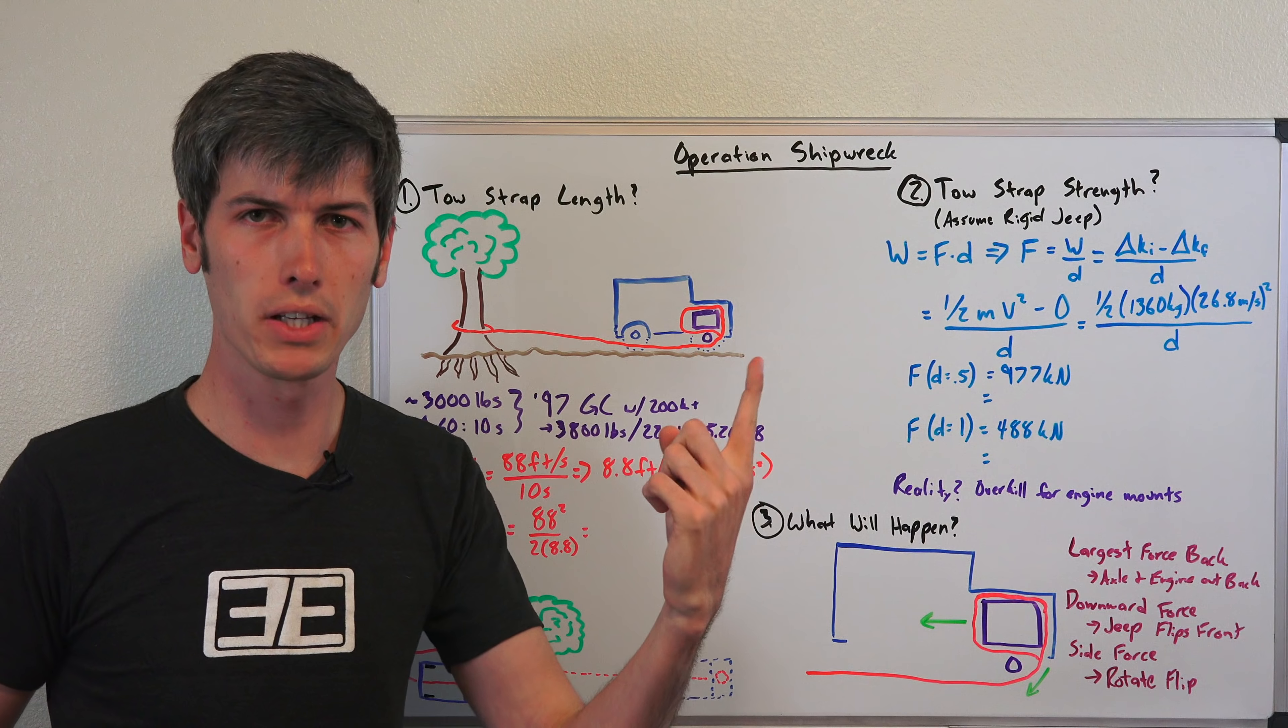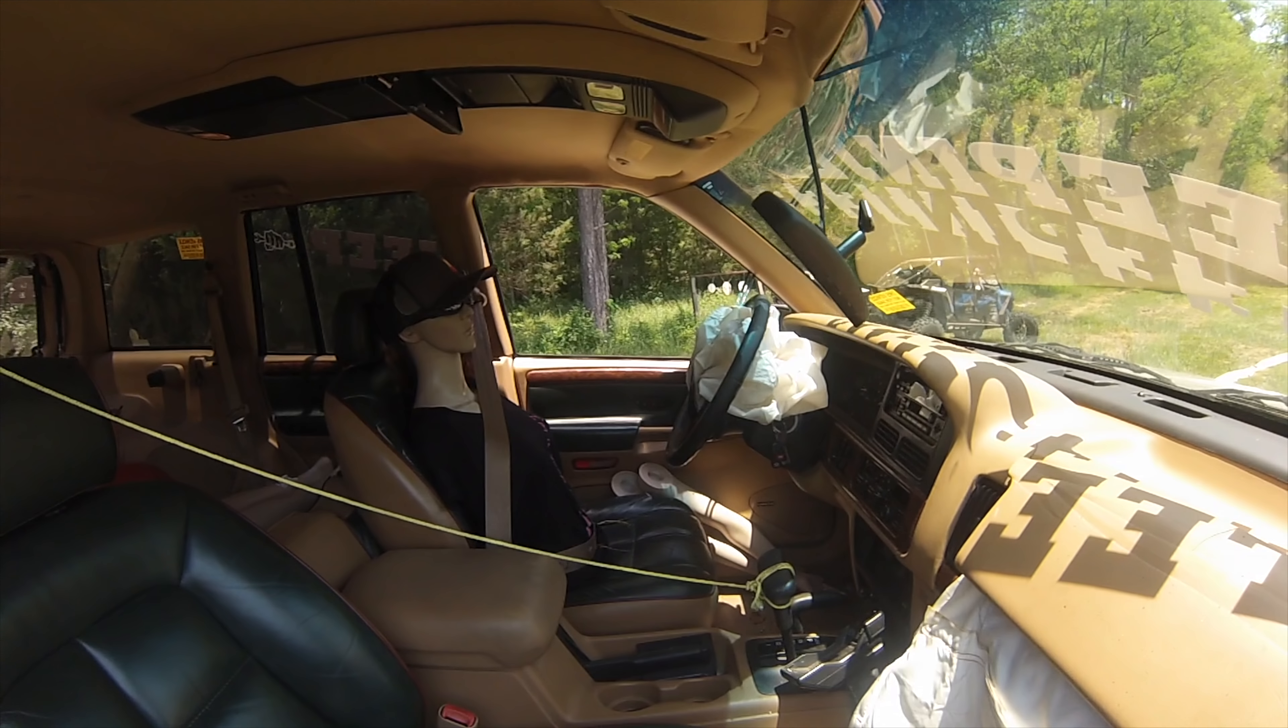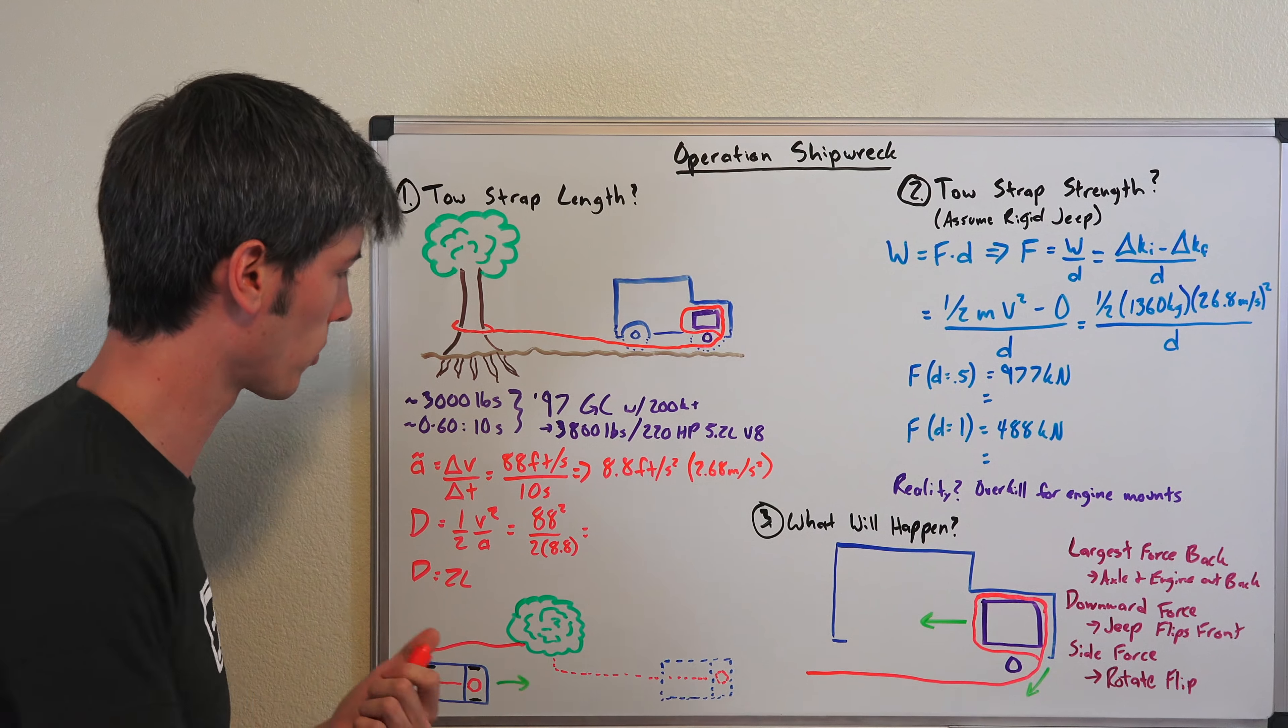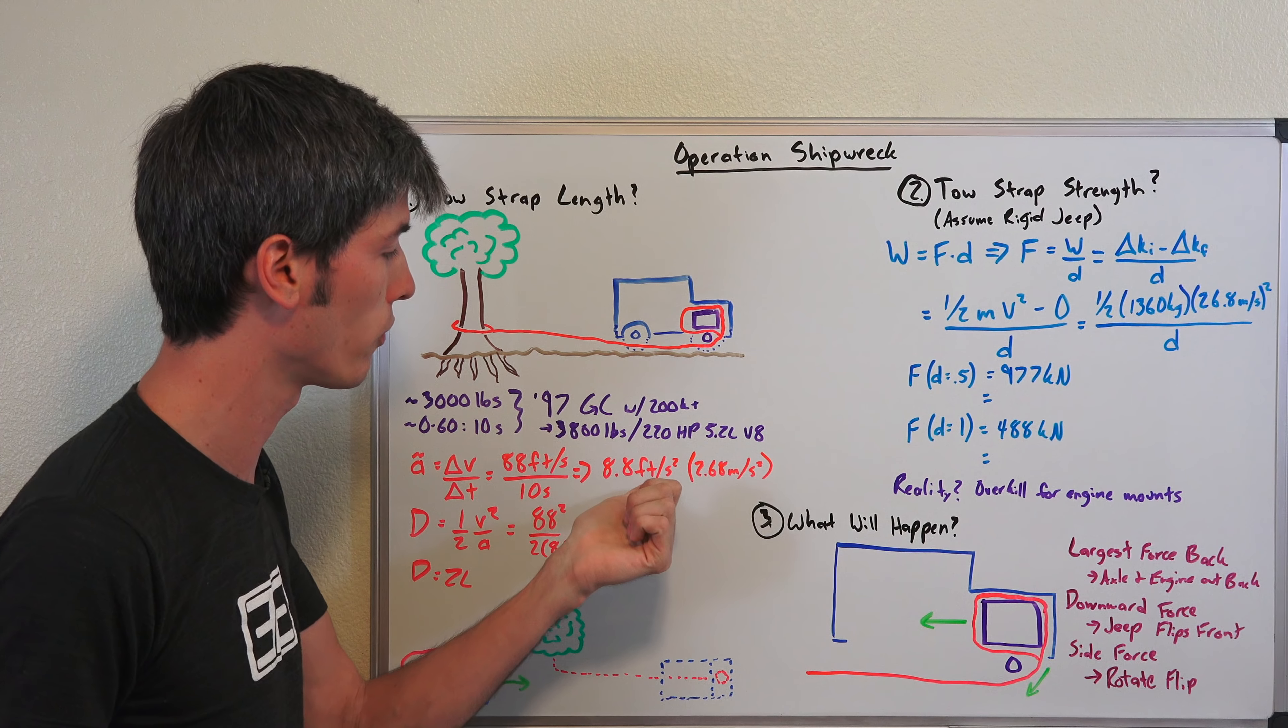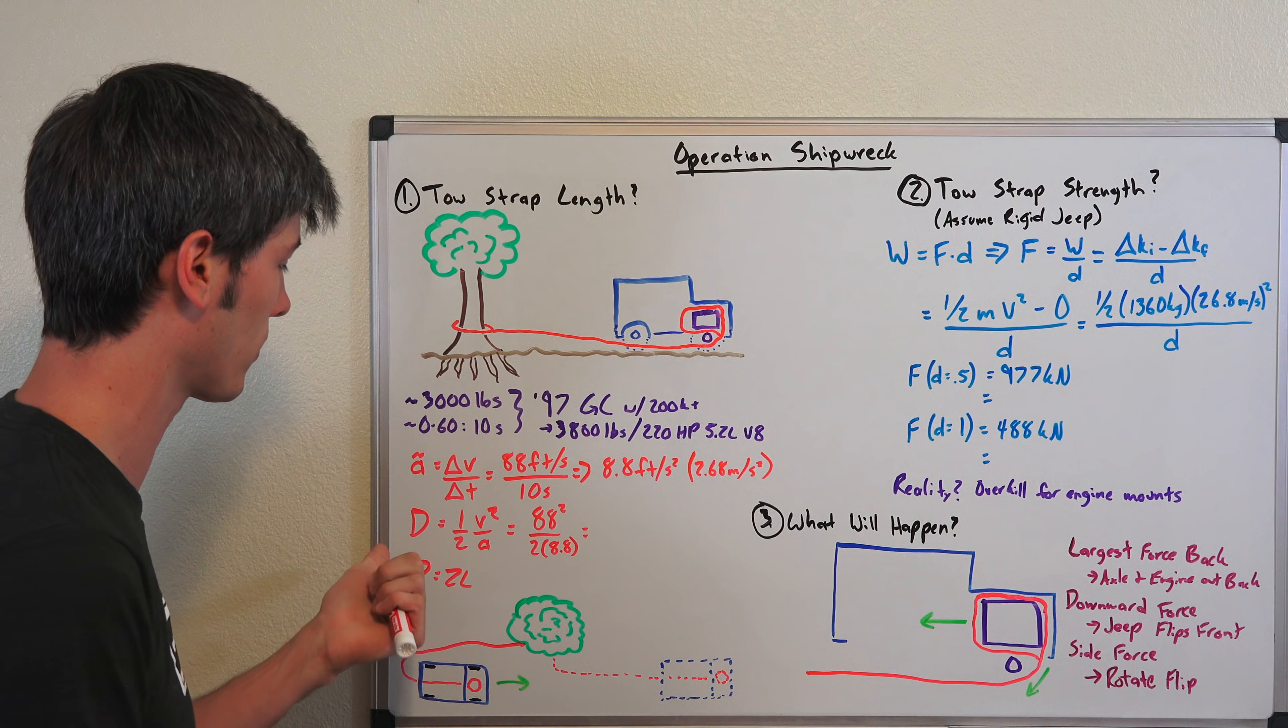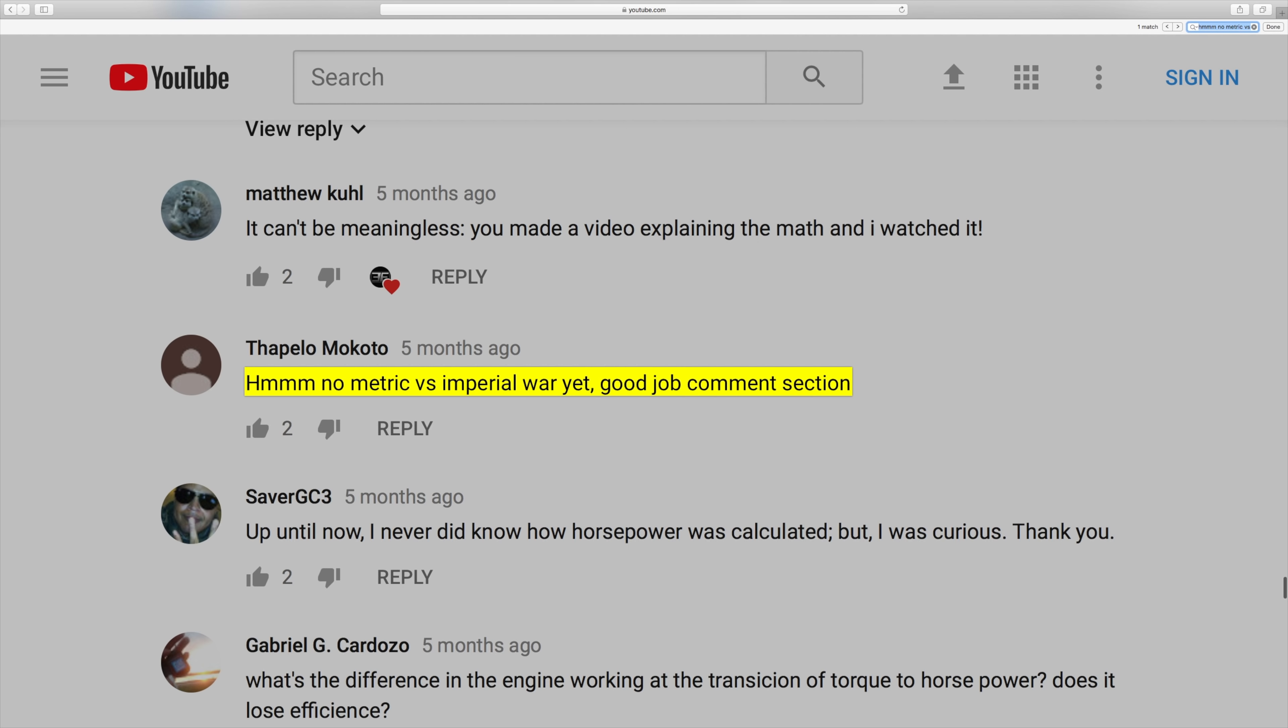The first question is how long does the tow strap need to be? This is basically just asking what speed do you want to get to, and at that speed, how long does it take to get there? He set the goal of around 60 miles per hour with that 0 to 60 being in about 10 seconds. We can calculate the acceleration, change in velocity over change in time. That gives us 8.8 feet per second squared or 2.68 meters per second squared.